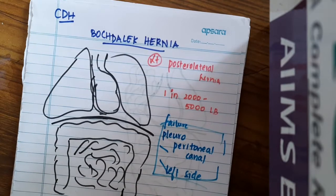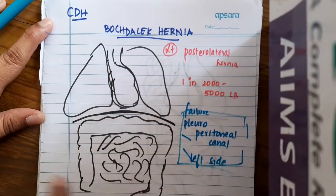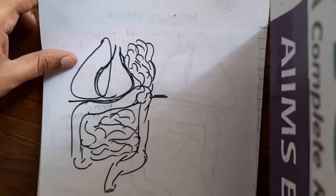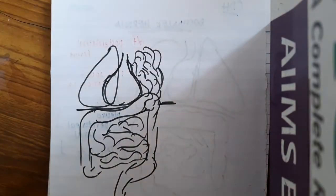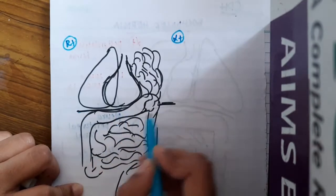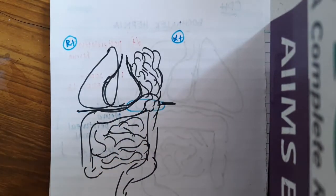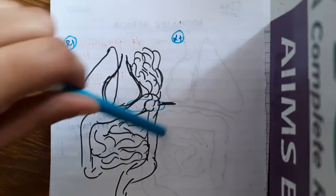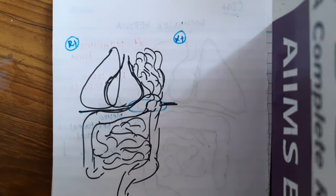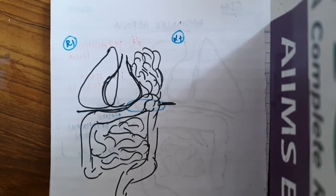What actually happens here is: this is the diaphragm which is formed. These are the two lungs, heart, and all the intestines. In the left side, there is failure of fusion of this pleuroperitoneal membrane. As a result, you will see a defect on the left side of the diaphragm.